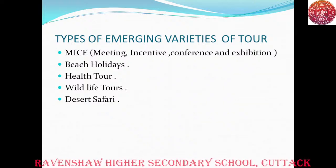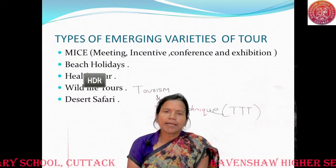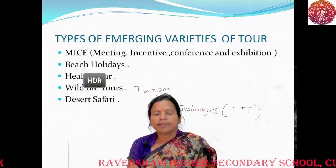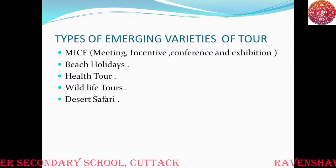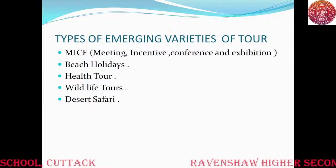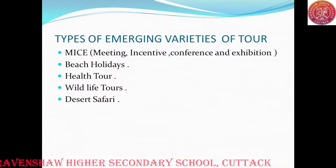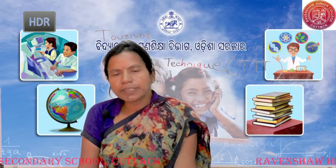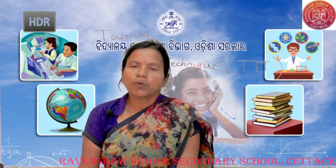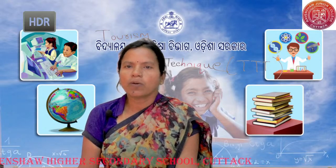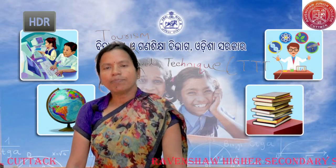First of all, we will discuss about MICE tourism. MICE means M for Meeting, I for Incentive, C for Conference, and E for Exhibition. This is a new innovative tour which attracts tourist travelers from different corners of the world. MICE tourism is getting popular and it is one of the important tourism aspects to attract more tourists to a destination. MICE tourism is a part of the business tourism industry.